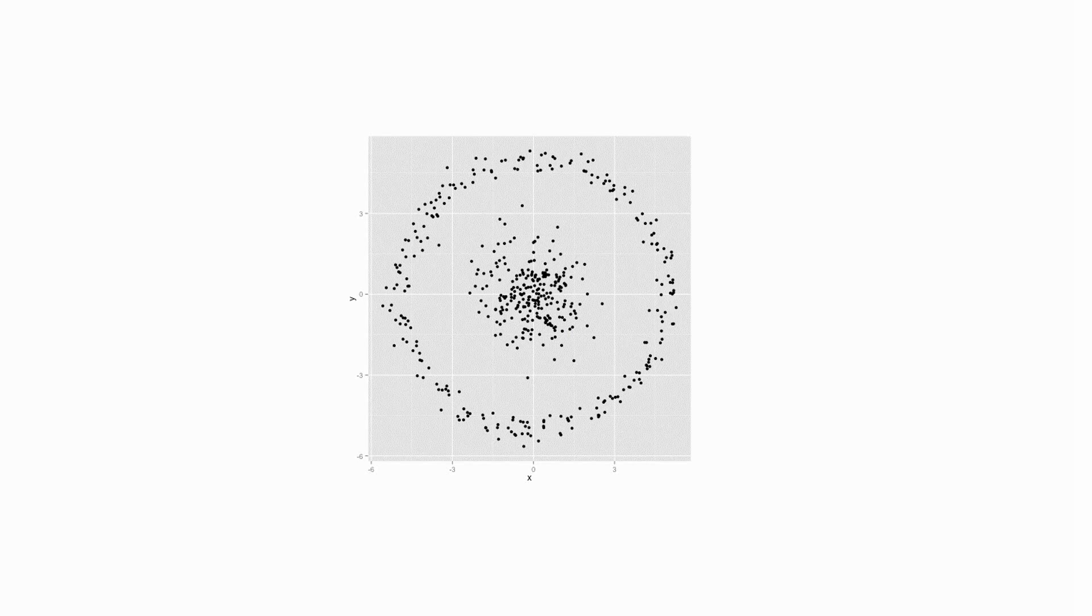Here is another example for which the k-means clustering algorithm will fail. Looking at this image, we humans immediately recognize two natural groups of points. There's no mistaking them. So let's see how k-means does.